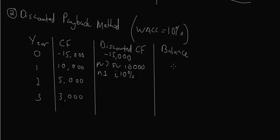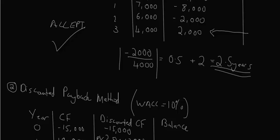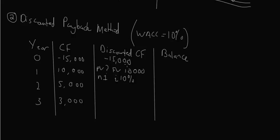This approach factors in the time value of money and gives you the number of years to break even. Because of the 10% discounting, you'll likely get decimal values in the discounted cash flow column. If breakeven occurs mid-year, apply the same fractional method: divide the negative discounted balance by the positive discounted cash flow for that year, then add that fraction to the whole number of years completed. That's the discounted payback method — identical to the regular method except you discount the cash flows first using the WACC.